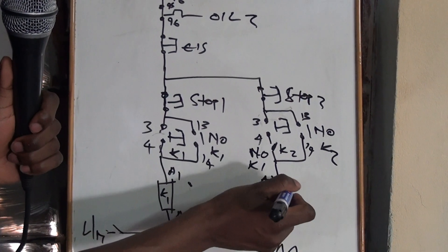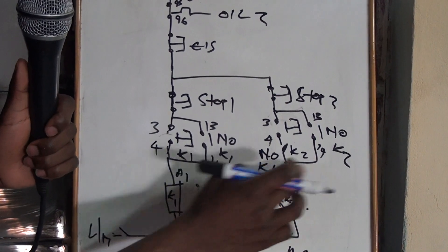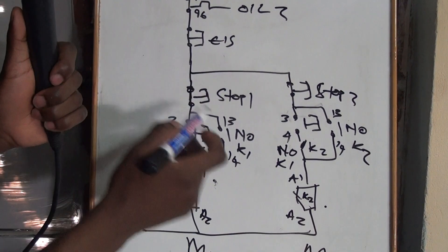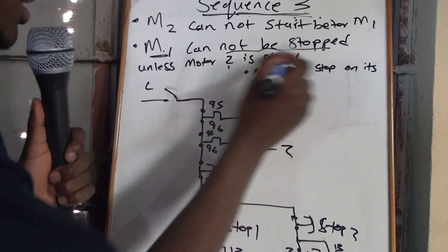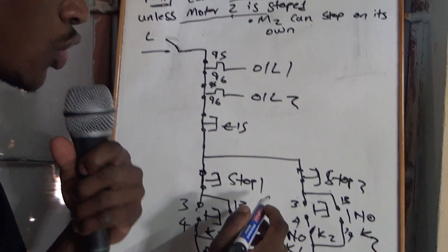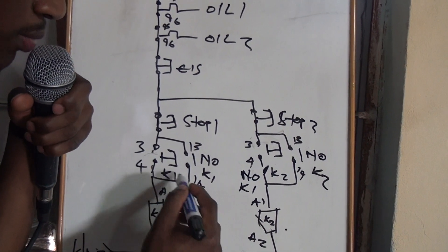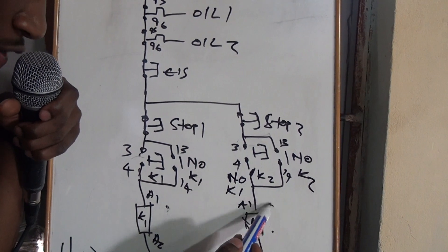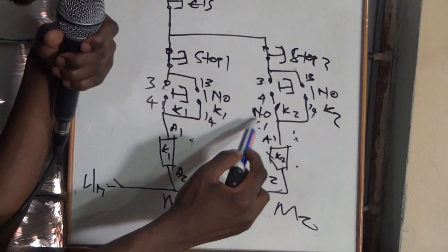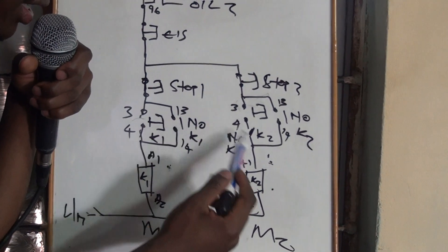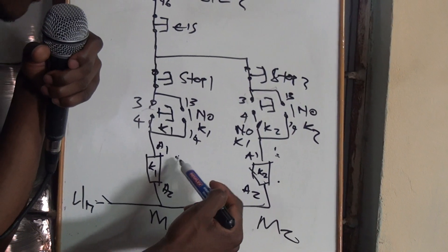You can start Motor 2 after starting Motor 1, and you can be able to stop Motor 1, and once you stop Motor 2, once you stop Motor 1, Motor 2 won't be affected. But now the statement says again, Motor 1, your Motor 1 cannot be stopped unless Motor 2 is stopped, so your Motor 1, it cannot be stopped until you stop this one. Motor 1, and Motor 2 cannot start until you stop Motor 1, so we have already put a normally open of K1.